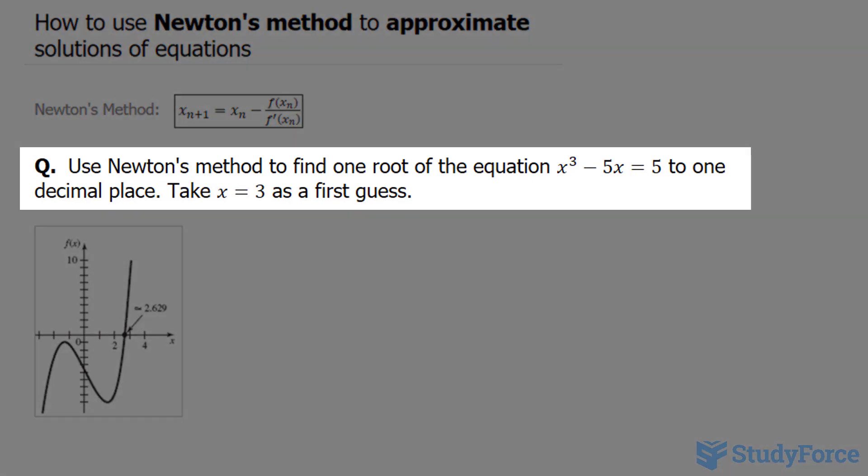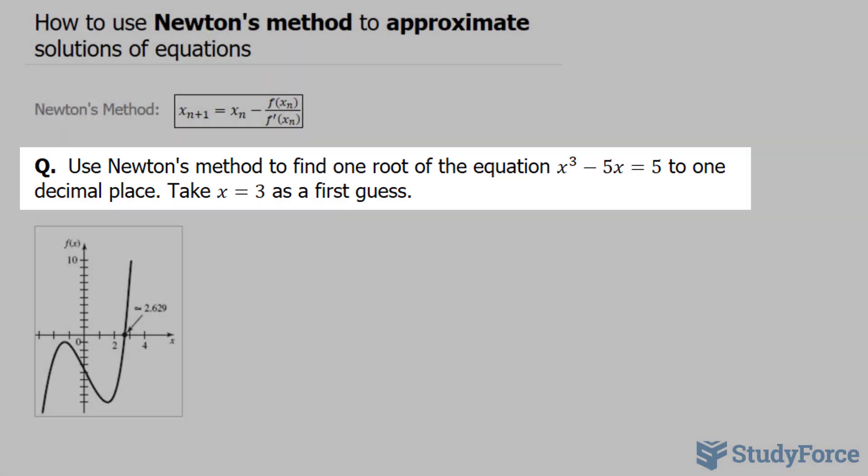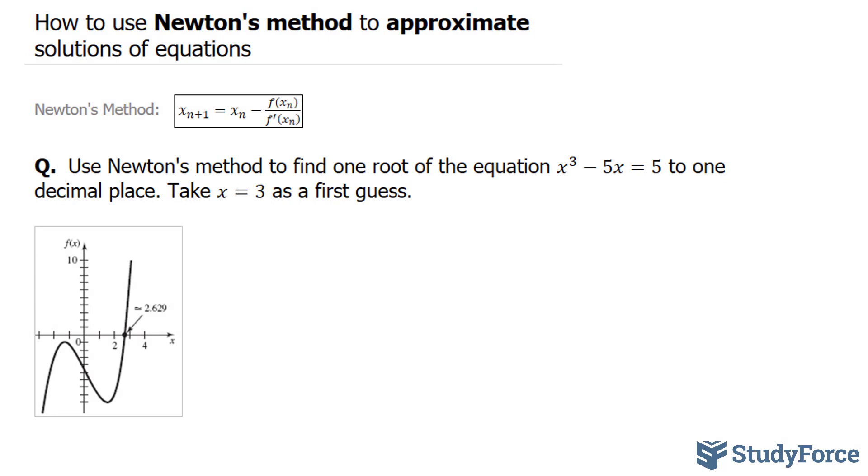The question reads: use Newton's method to find one root of the equation x³ minus 5x equals 5 to one decimal place. Now, the question tells us to take x equals 3 as a first guess.